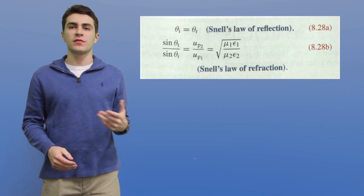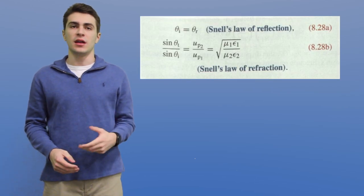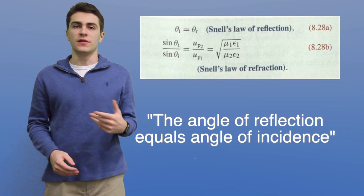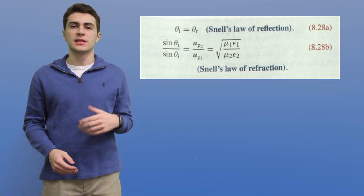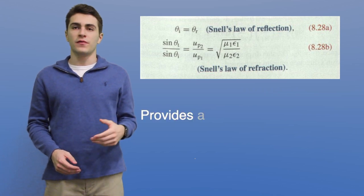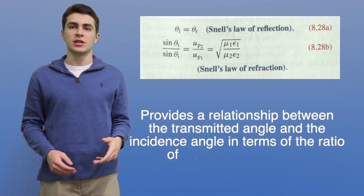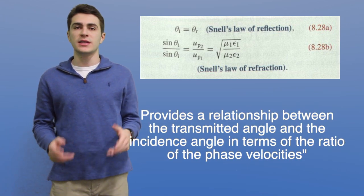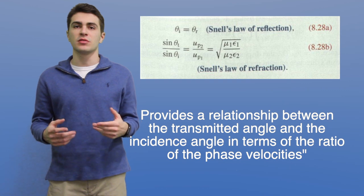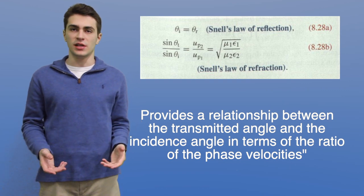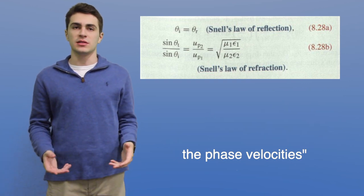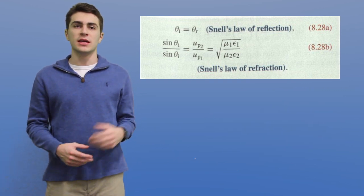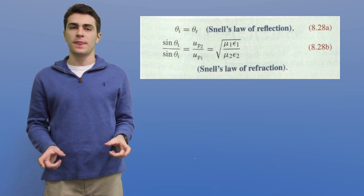Another concept we need to know is Snell's Law, found in Chapter 8 of our textbook. Snell's Law of Reflection states that the angle of reflection equals the angle of incidence. And Snell's Law of Refraction provides a relationship between transmitted angle and incident angle in terms of the ratio of phase velocities. The formula for Snell's Law is: the incident angle equals the reflected angle.